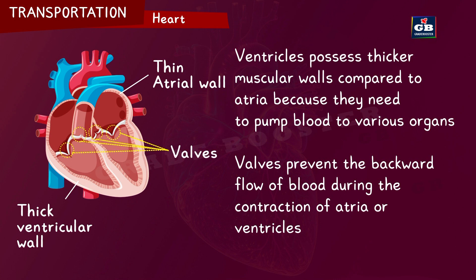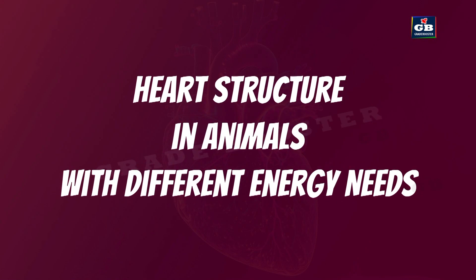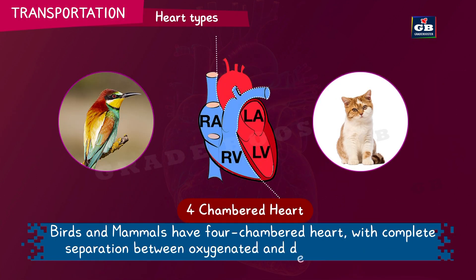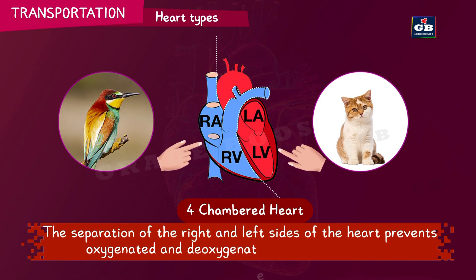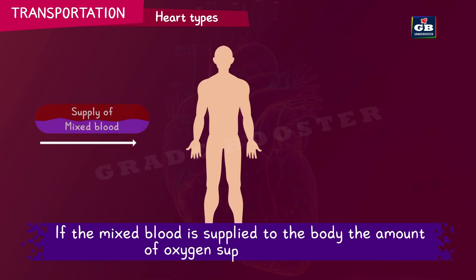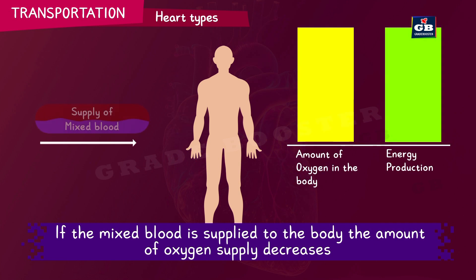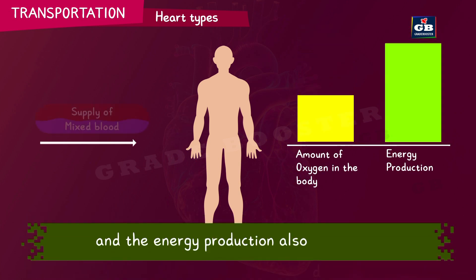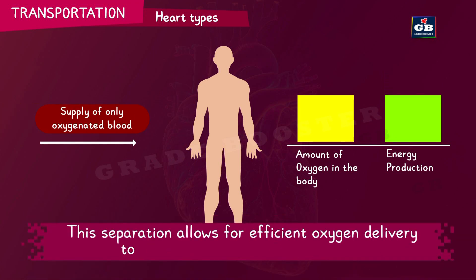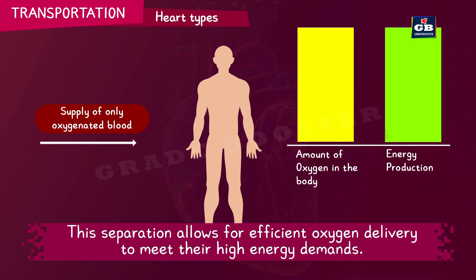Valves prevent the backward flow of blood during the contraction of atria or ventricles. Regarding heart structure in animals with different energy needs: birds and mammals have a four-chambered heart with complete separation between oxygenated and deoxygenated blood. This separation prevents the two types of blood from mixing. If mixed blood is supplied to the body, the amount of oxygen decreases and energy production also decreases. This separation allows for efficient oxygen delivery to meet their high energy demands.